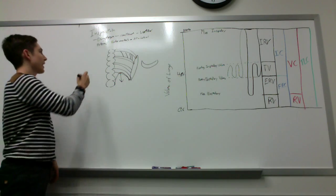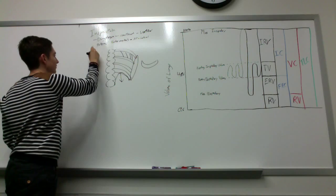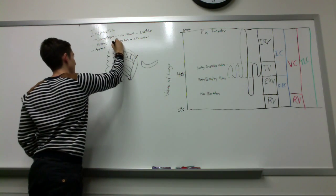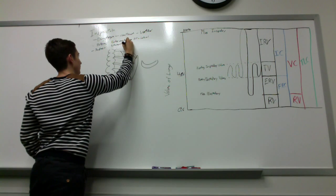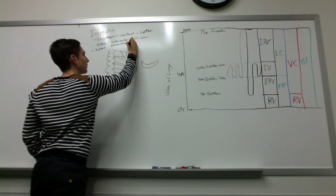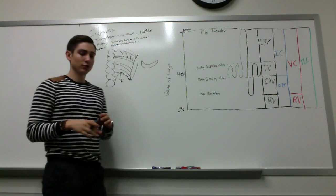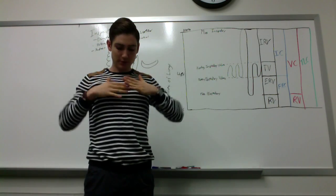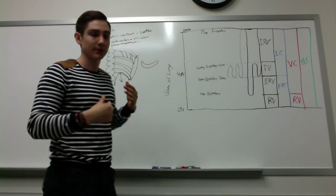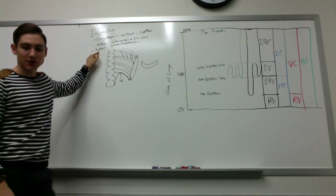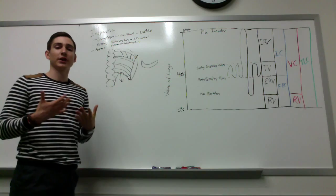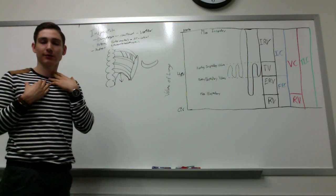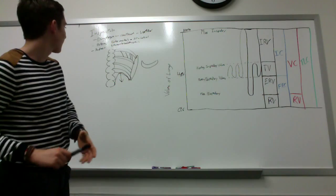On exertion, you'll also recruit the scalene muscles and the sternocleidomastoid muscles. These are located up in the neck and upper chest, and when they contract, they also pull the ribcage up, which helps increase the anterior-posterior position. With really high exertion, you can also have the airways open up via smooth muscles in the larynx, the pharynx, and the nasal passages.